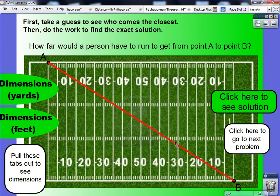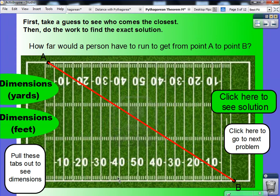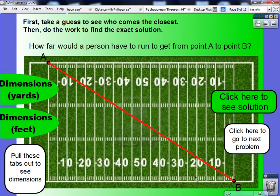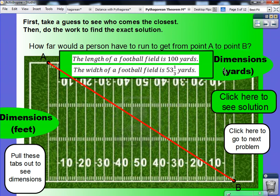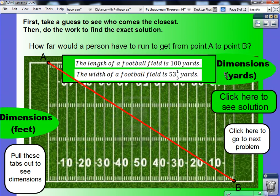Well, in order to solve this problem, there are two things we need to know. We need to know, number one, how far is it from goal line to goal line and also how wide is the football field? It actually turns out that in yards, the length of a football field is 100 yards. The width of a football field is 53 and a third yards.